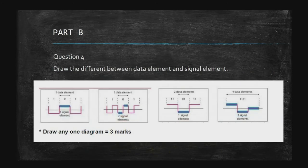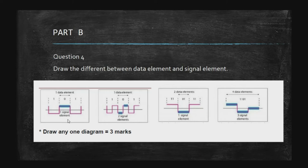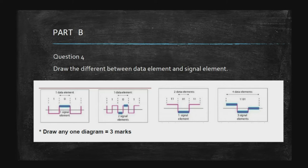Question number four in Part B asks you to draw the difference between a data element and a signal element. Any one of these diagrams will give you three marks. The data element is shown here, and this is the signal element. For example: one data element in two signal elements, or two data elements in one signal element, or three signal elements carrying four data elements.